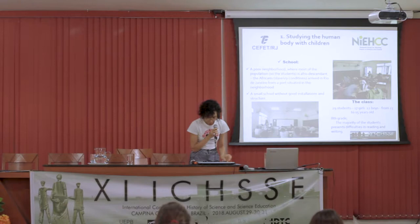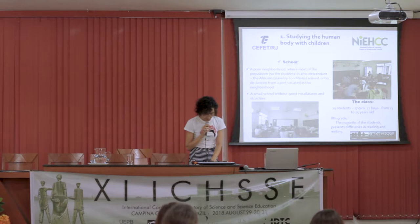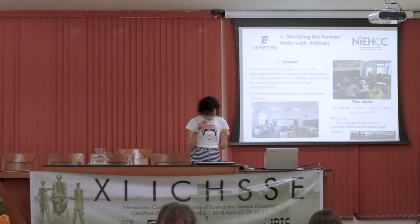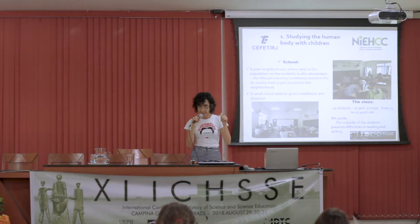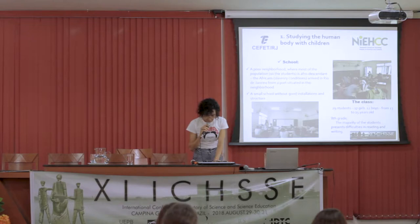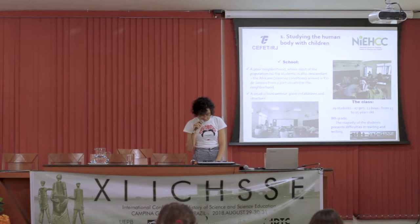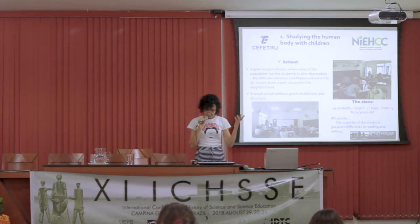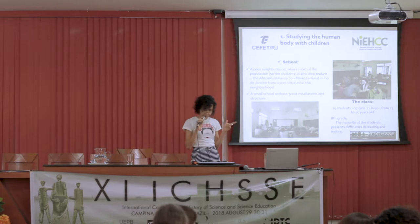The first example was developed in a school situated in a poor neighborhood in Rio de Janeiro. Most of the students are Afro-descendant. There is a port close to this school from where Africans arrived in Rio de Janeiro in the 18th and 19th century under conditions of slavery. This school is very small, without good installations and infrastructure. In the class there were 29 students — 17 girls and 12 boys — between 13 and 15 years old. The didactic sequence was developed in an eighth grade science class, and most of the students present difficulties in reading and writing.